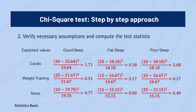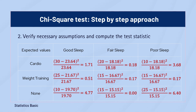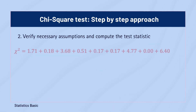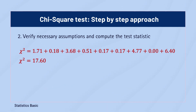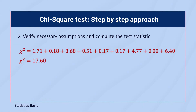In the same contingency table, we'll calculate the contribution of each cell to the chi-square statistic using the observed and expected frequencies. Adding up these values, the calculated chi-square statistic is 17.6.